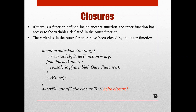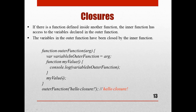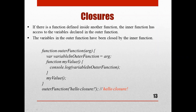The inner function 'my value' has a body with console.log that prints 'variable in outer function'. That means the inner function can access the variable from the outer function. The variable in outer function holds the value of the argument passed to the outer function. After closing the inner function body, we call that inner function — 'my value()' — without any parameter. Then outside, we call the outer function with the argument 'hello closure'.